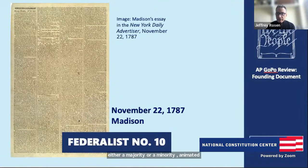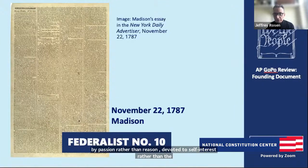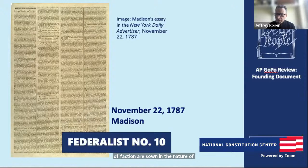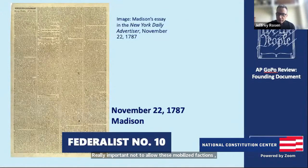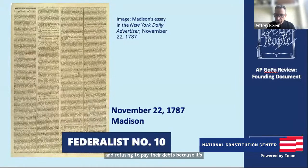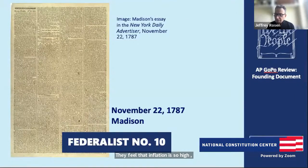It's really important not to allow these mobilized factions — which we can also call mobs — to mobilize. Shays' Rebellion is a good example of the kind of faction the framers were trying to avoid: armed debtors in western Massachusetts mobbing federal courthouses and refusing to pay their debts because it's not in their interest to do so. They felt that inflation was so high they couldn't afford to pay, and basically wanted to get out of their obligations. For Madison, that threatened the public good, which has to do with protecting property rights. Quoting John Locke, he says that the protection of private property is the first goal of government.